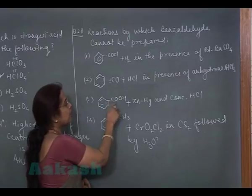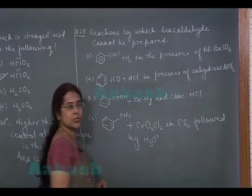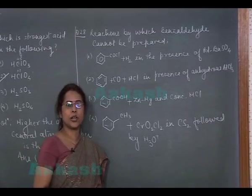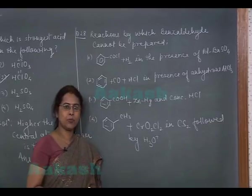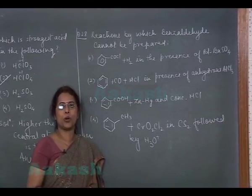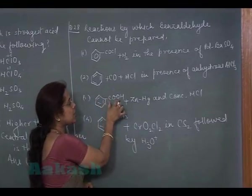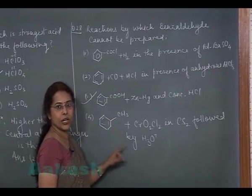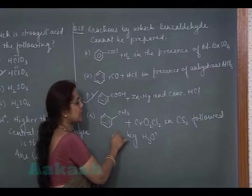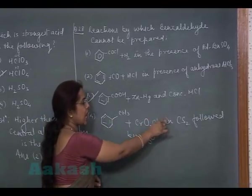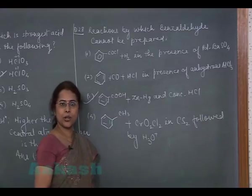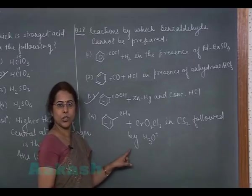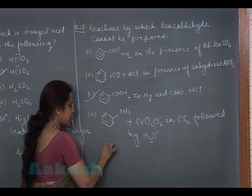The third option is benzoic acid plus zinc amalgam and concentrated HCl. This is known as Clemmensen reduction. This reduction can be used for the reduction of carbonyl compound. But this reducing agent cannot reduce benzoic acid. So using this method, we cannot prepare benzaldehyde. The fourth option is methyl benzene, chromyl chloride in carbon disulfide followed by acidic hydrolysis. This is known as Etard reaction, which is used to prepare benzaldehyde commercially. So here the option 3 is correct answer.